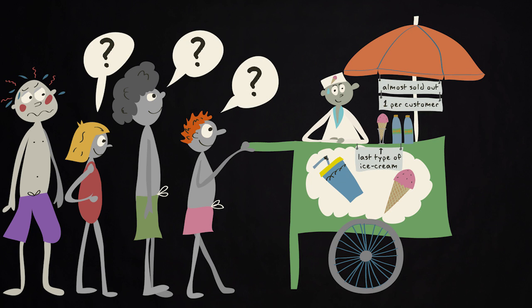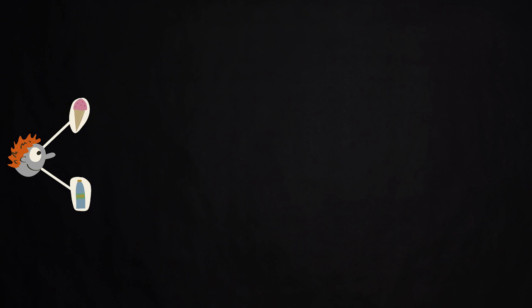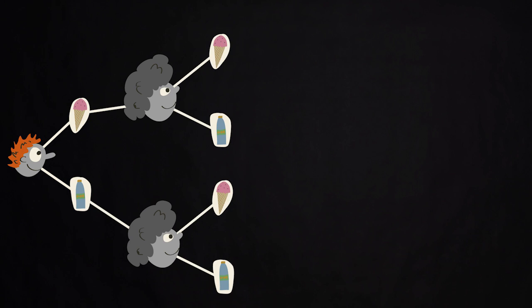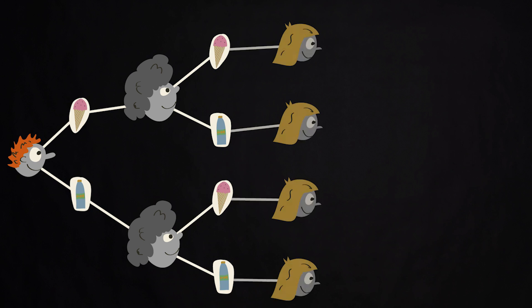You have no idea about choices that the other customers will make, so these are random events for you. The first customer might choose either a soft drink or an ice cream. And after this choice, the second has the same options. Next is the third customer's turn.